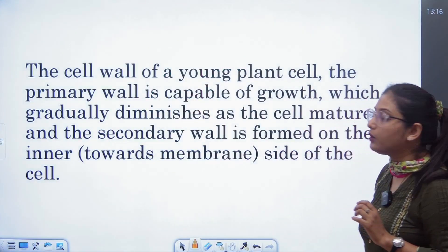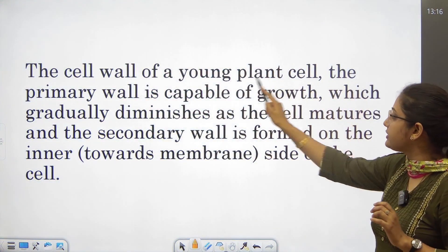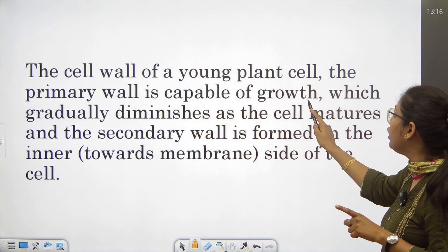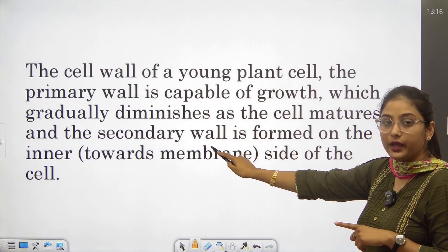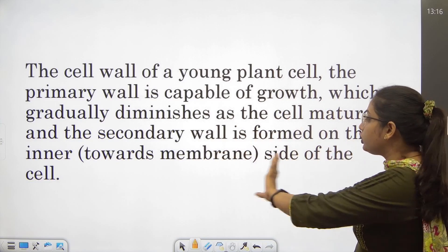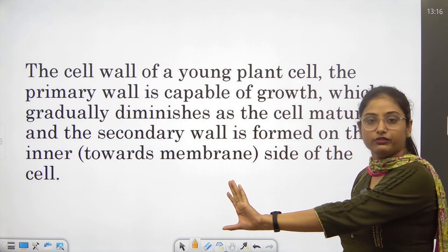They form cell walls and cell membrane deposition. The cell wall of a young plant cell is capable of growth. Then, as the cell matures, the secondary wall forms towards the plasma membrane of the cell.